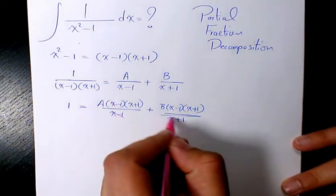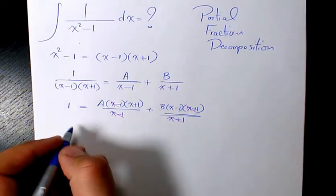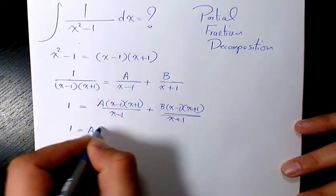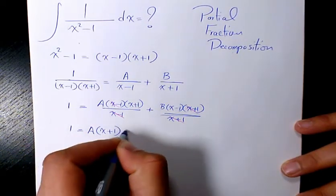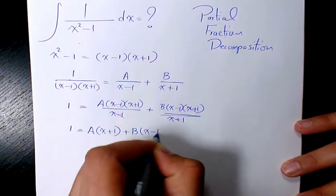So these and this cancel out. This and this cancel out. And we have 1 equals A times x plus 1 plus B times x minus 1.